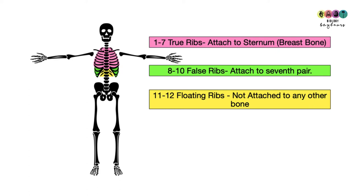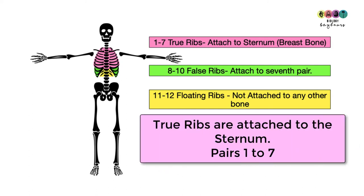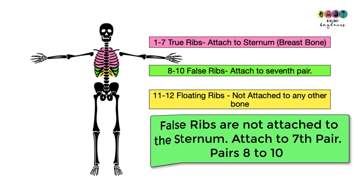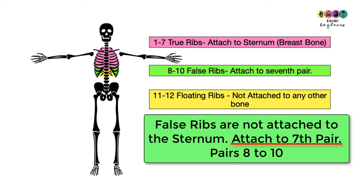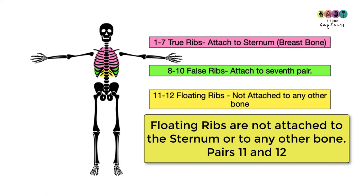The ribs are part of the axial skeleton and you have 12 pairs of ribs. Pairs one to seven are known as true ribs — they attach to the vertebrae at the back and wrap around to attach to the sternum. Pairs eight, nine and ten are known as false ribs because they attach to the seventh pair, not to the sternum. Pairs 11 and 12 are known as floating ribs because they don't attach to any other bone at the front.